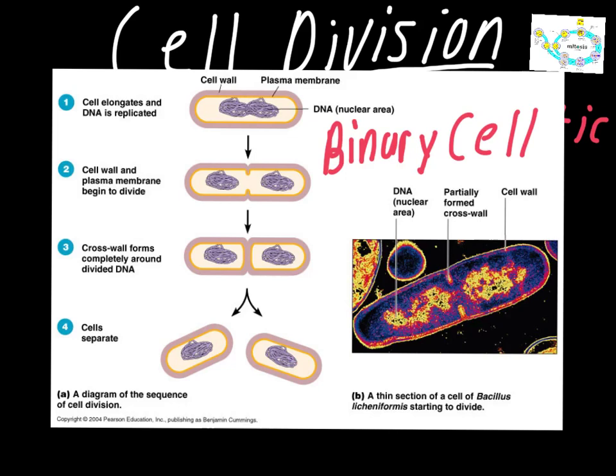On the right-hand side is a transmission electron image of this process happening. You can see the DNA is still kind of a clustered mess — that was one of the things that defined prokaryotic cells; they don't have organelles on the inside to give them structure, so it looks disorganized and messy. The cross wall is beginning to form, which is the term for the section that cuts off the two sections of DNA, one on each side of the new cell.